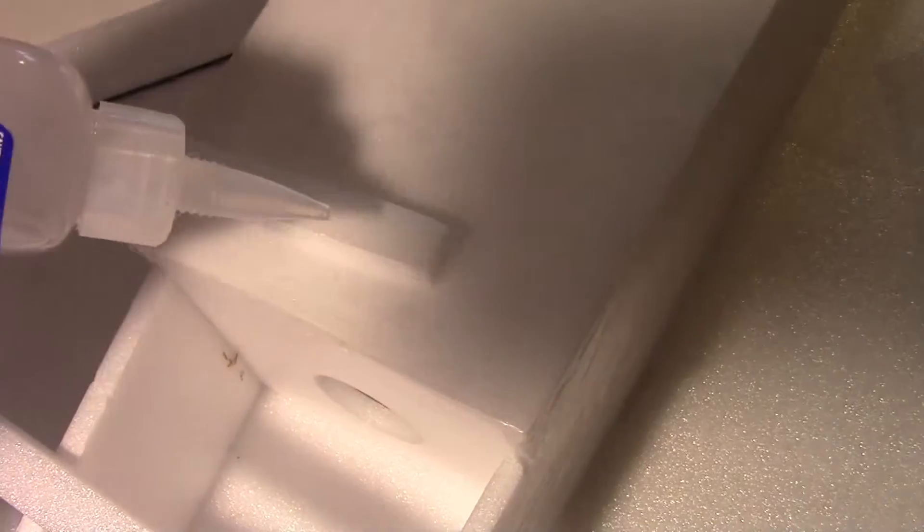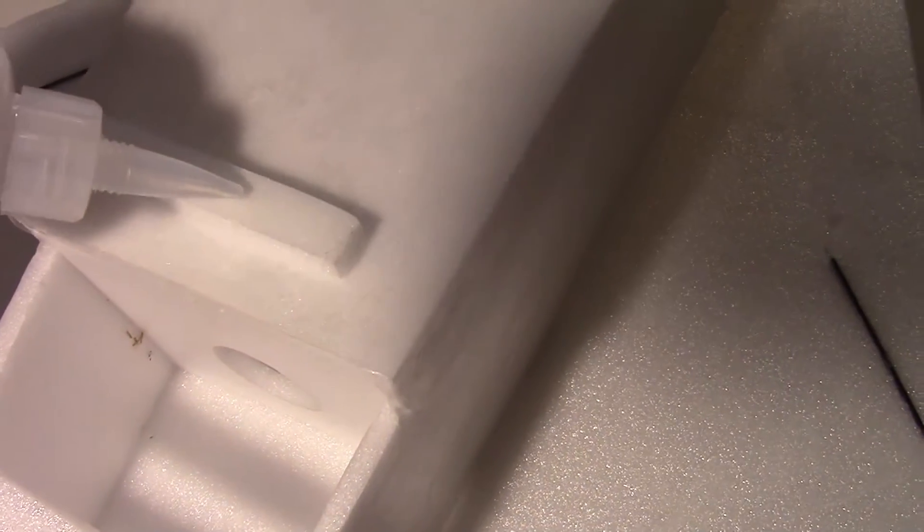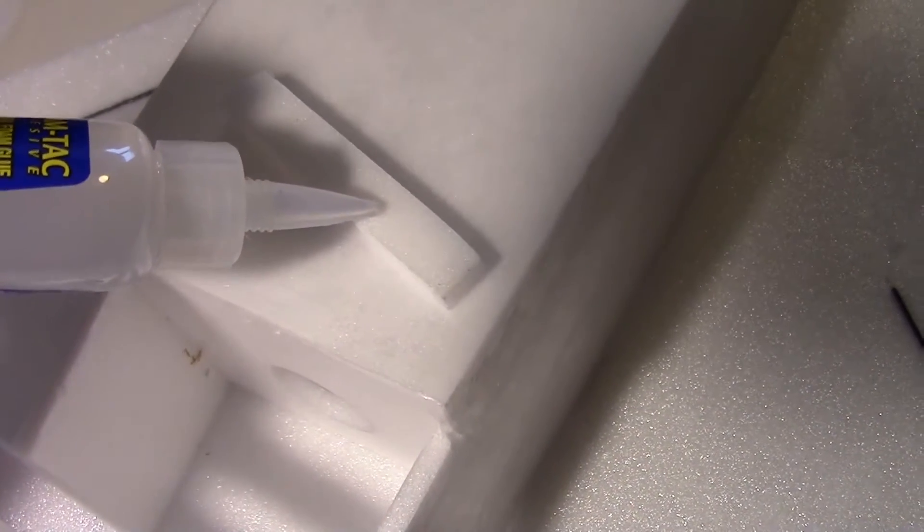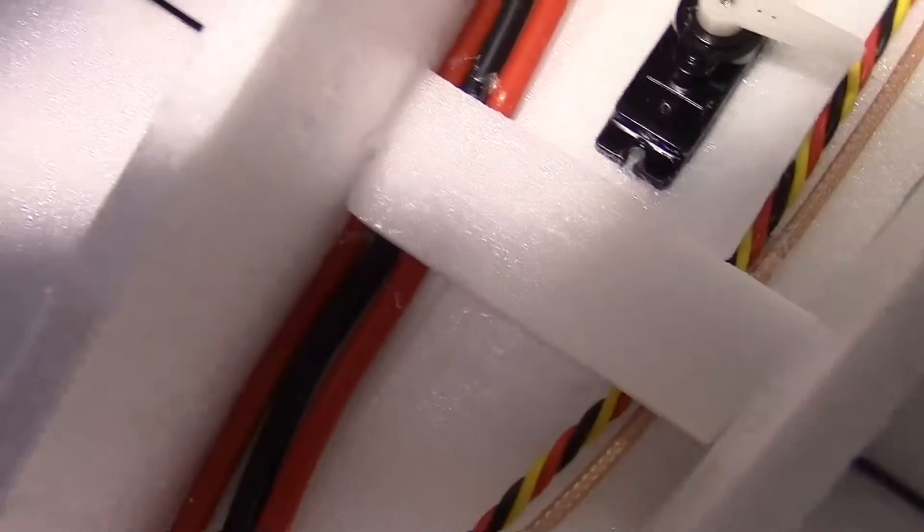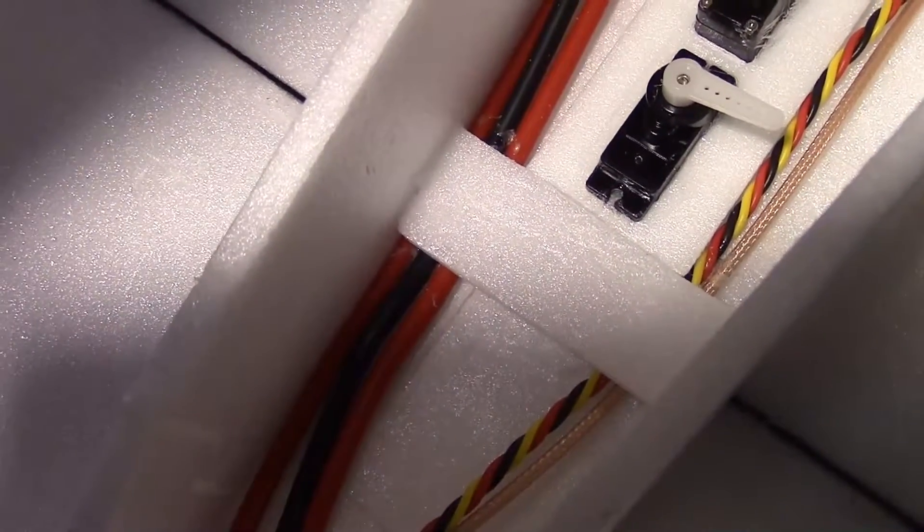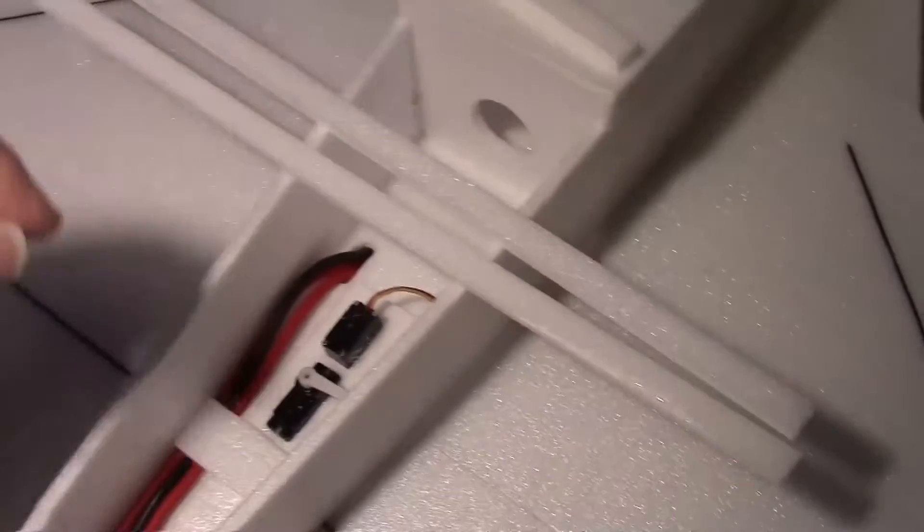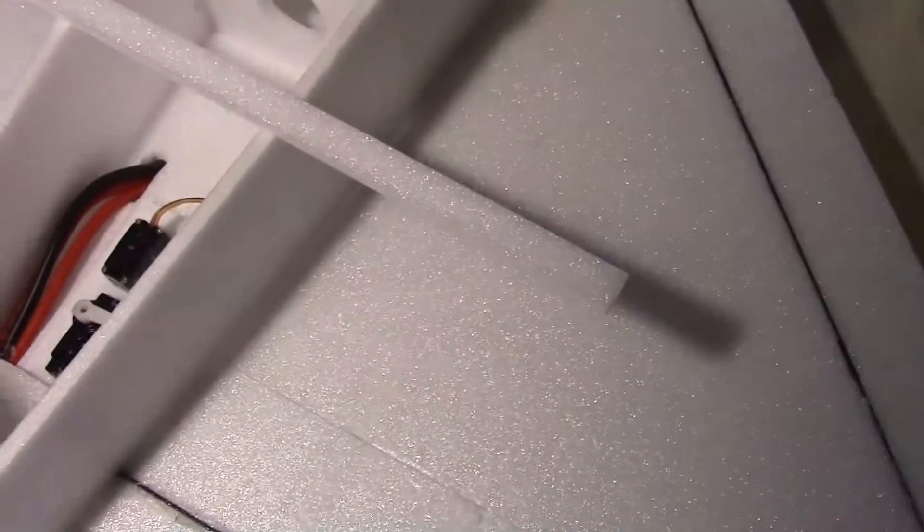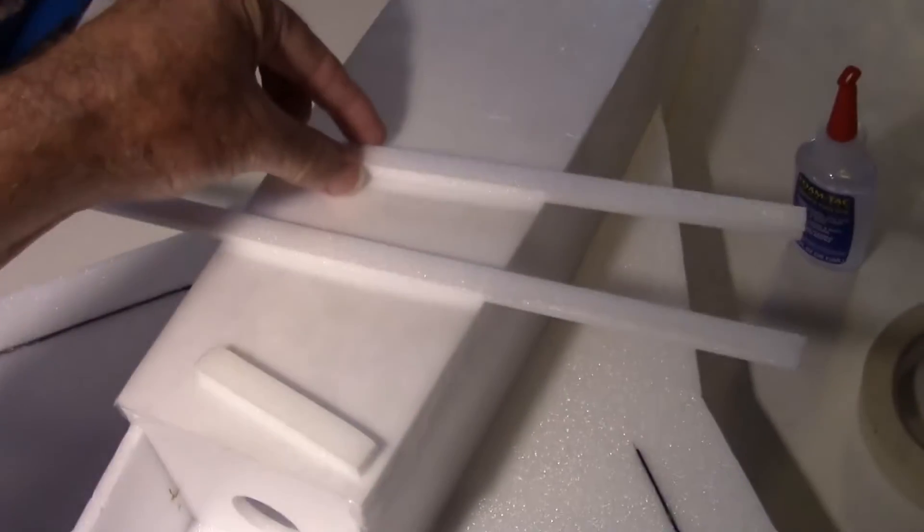Okay, I'm just finishing up putting some foam tack on these pieces right here, and then I'm going to let them dry or tack up before I stick them on there. Also, down here I've added a little piece across here, a little piece of Depron to hold the wiring in place. So I've got that glued in right now too. Okay, I think they're pretty well tacked up so let's go ahead and stick them on. I'll put these over here. I'll go with this one first.